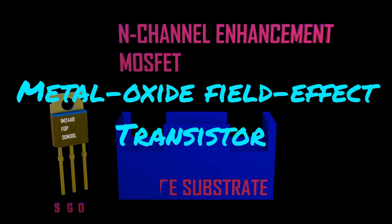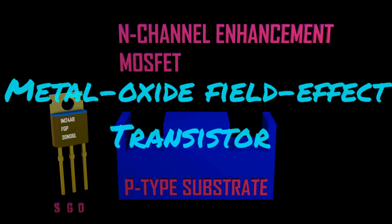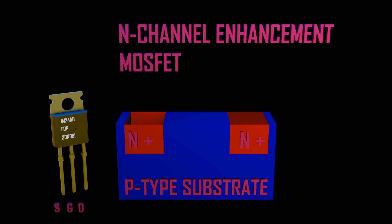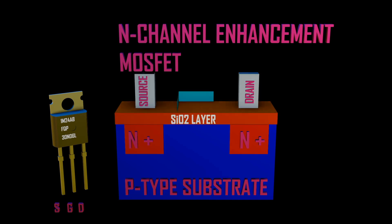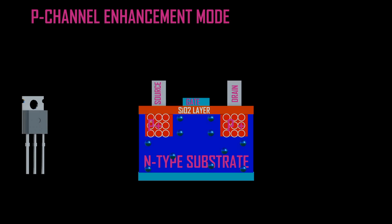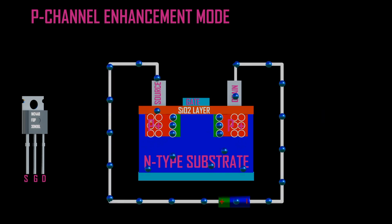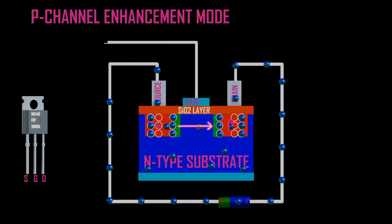The word MOSFET stands for Metal Oxide Semiconductor Field Effect Transistor. It is a type of FET with an insulated gate that is assembled by controlled oxidation of the semiconductor. The main working principle of MOSFET is to control the voltage and current which is flowing between the source and drain.